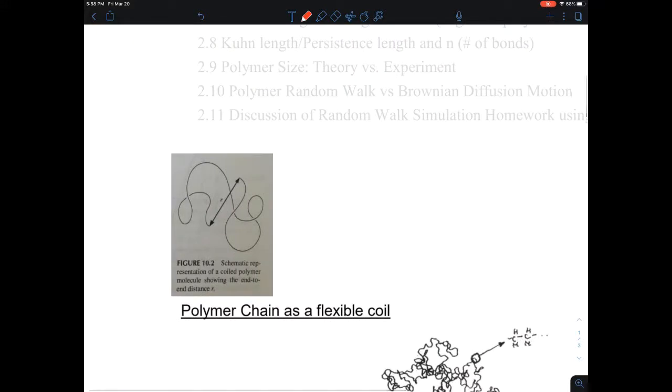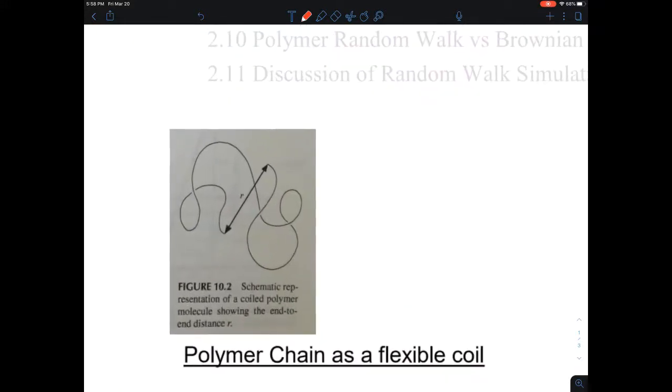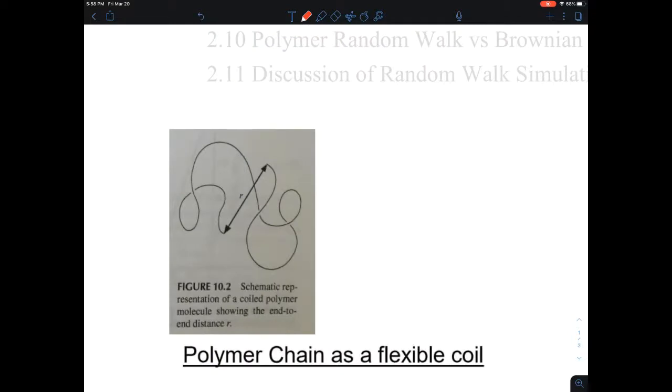This is an example of figures from our text. As you can see, they are using the symbol R to represent - this is, let's say this is a start, this is an end. This vector can be described as a small r, and that's an end-to-end distance vector R. Some people also use R with a capital.